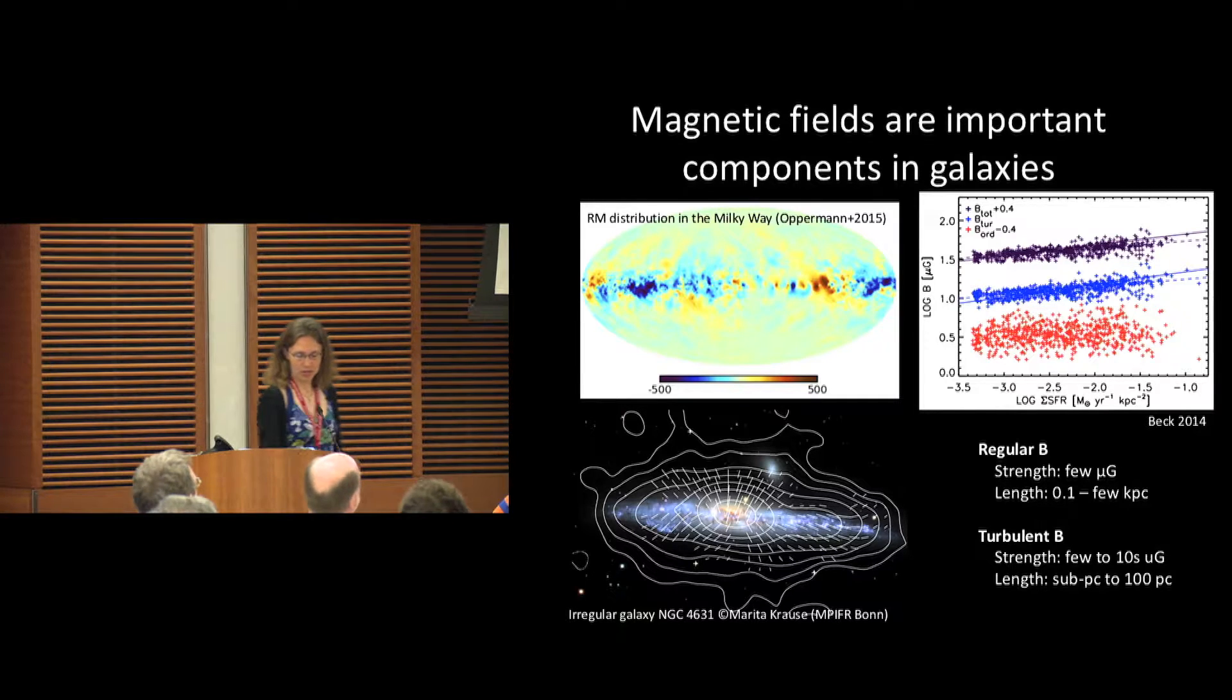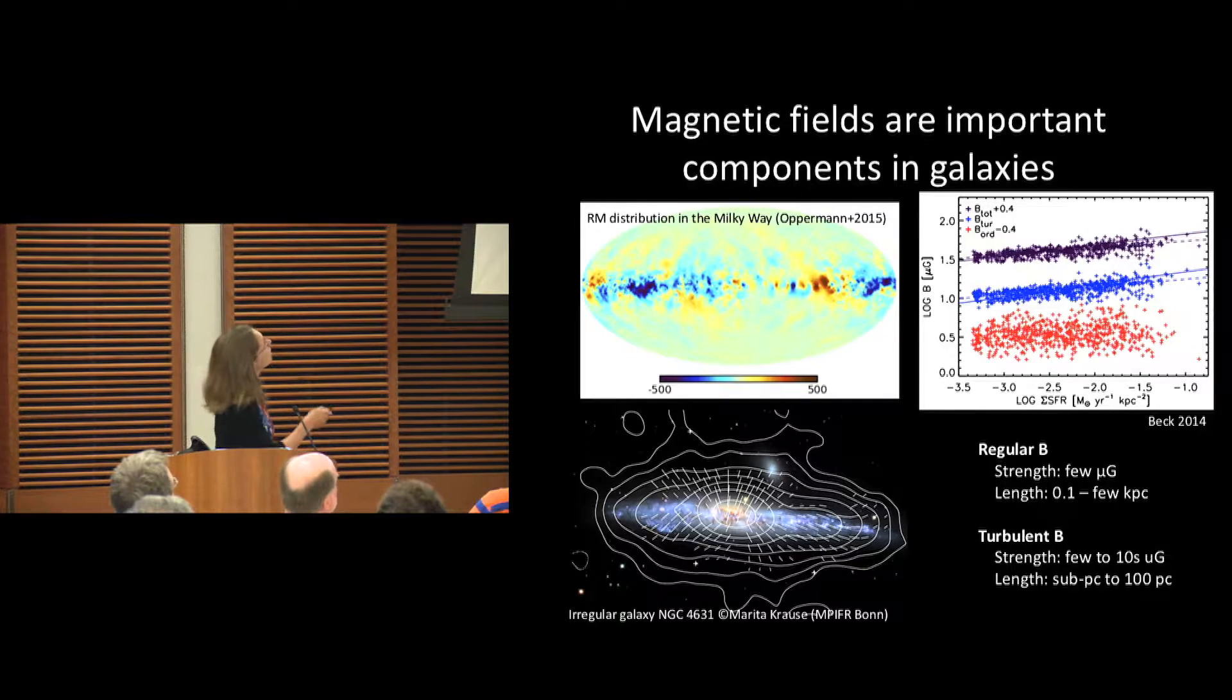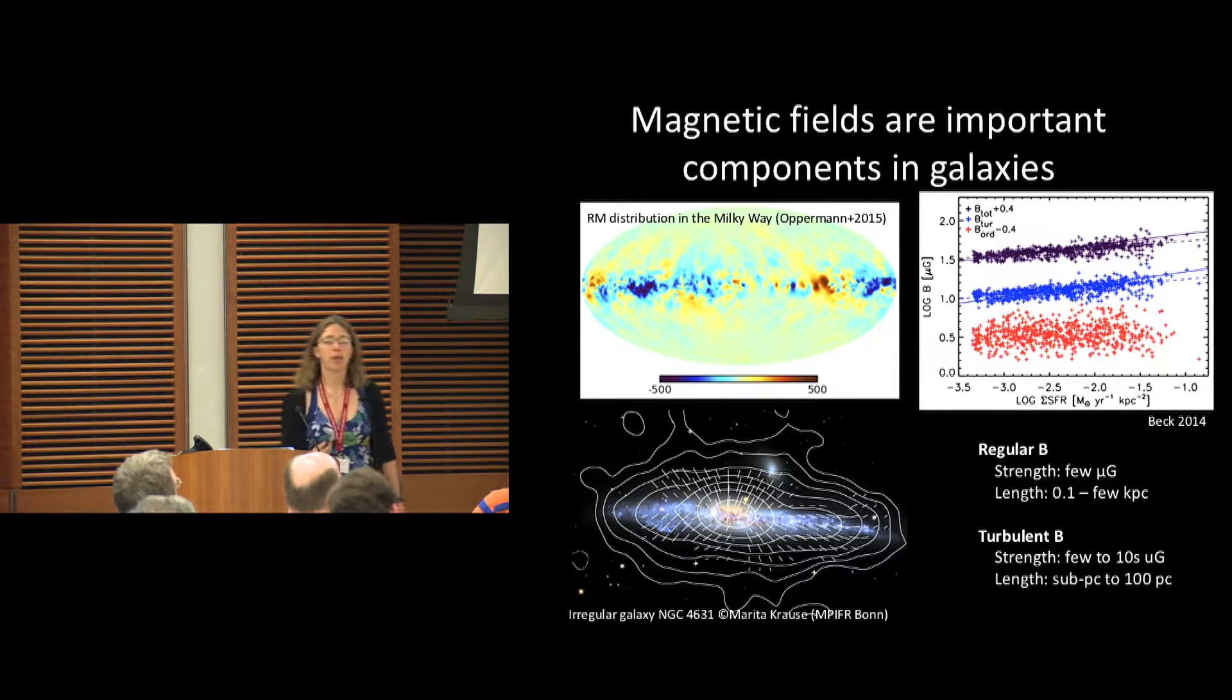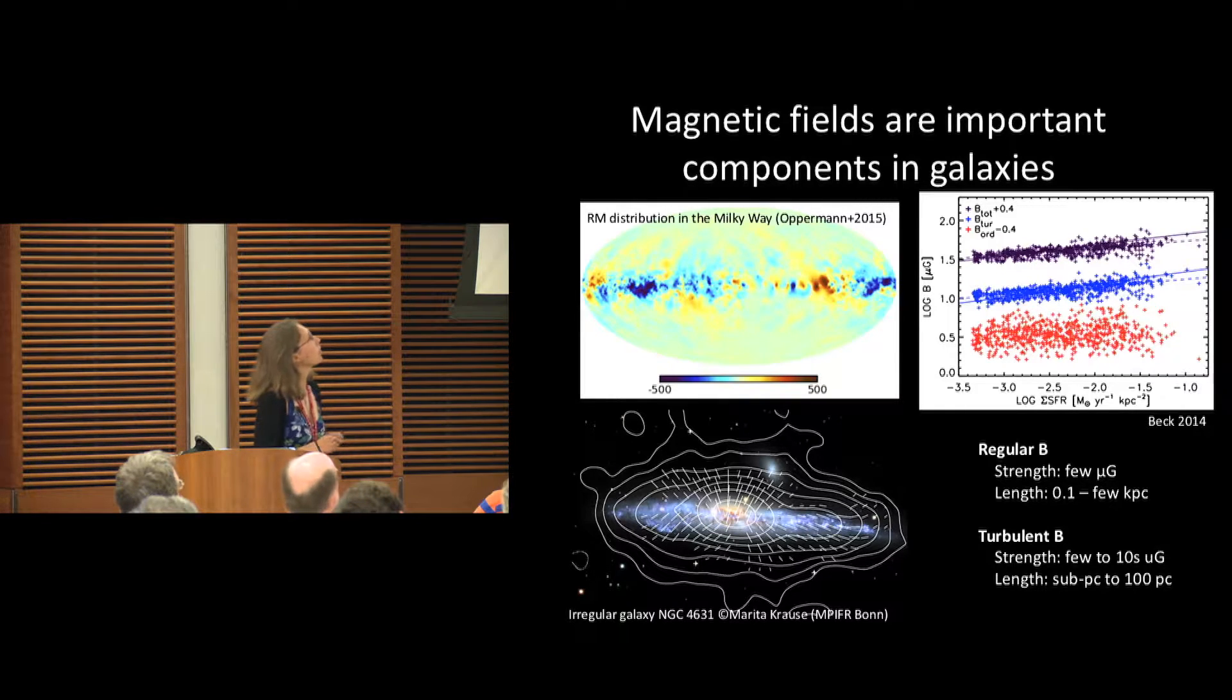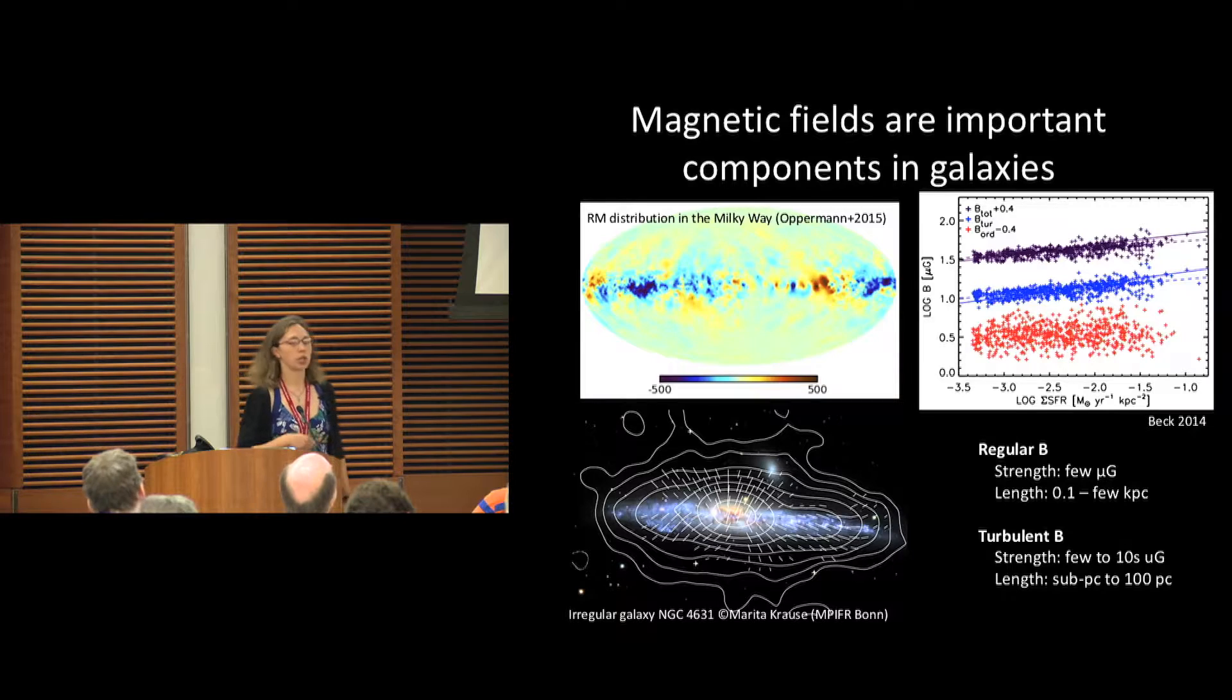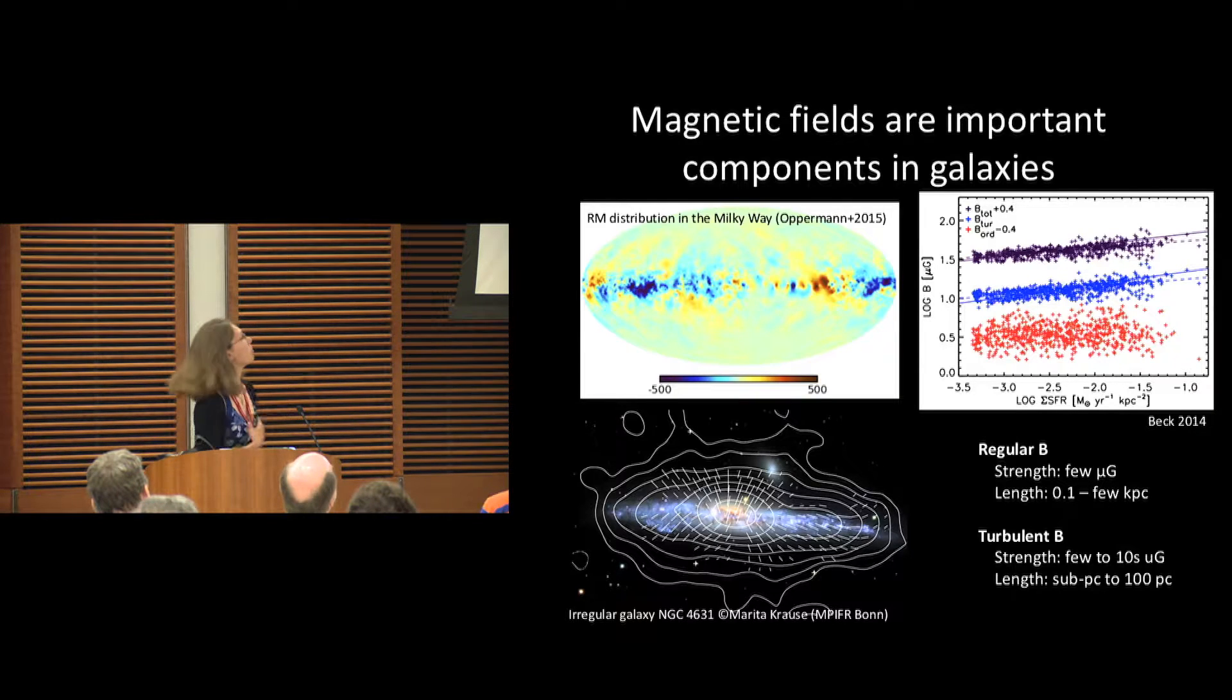Magnetic fields are really important components in galaxies. Here in the top left we've got the rotation measure map of the Milky Way galaxy. You can see the line of sight magnetic field where the colors are darker. That's a stronger magnetic field component along the line of sight.